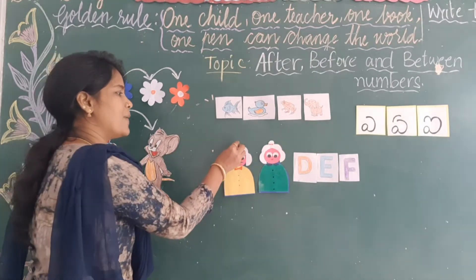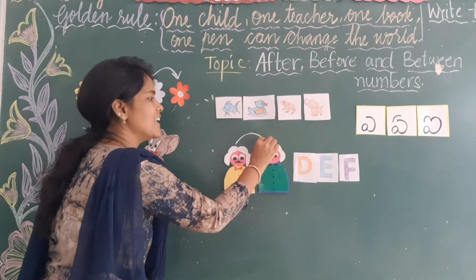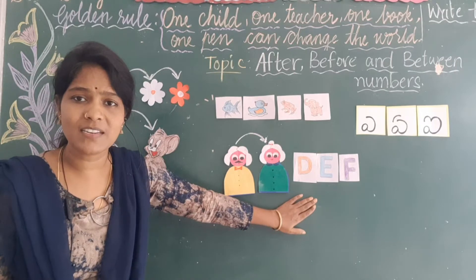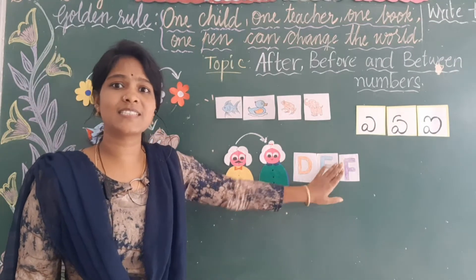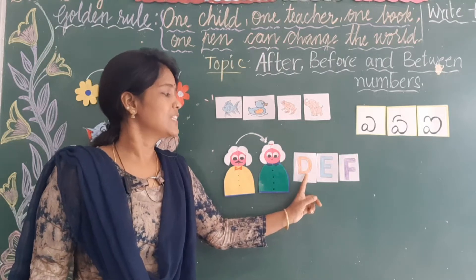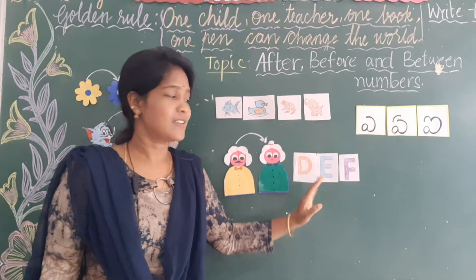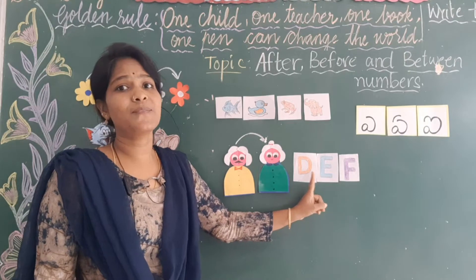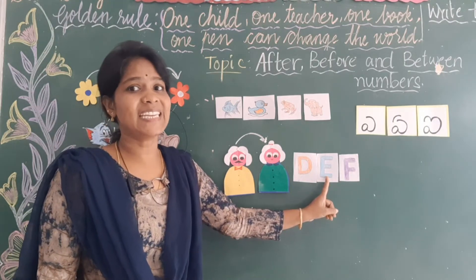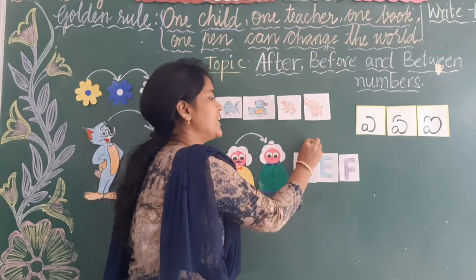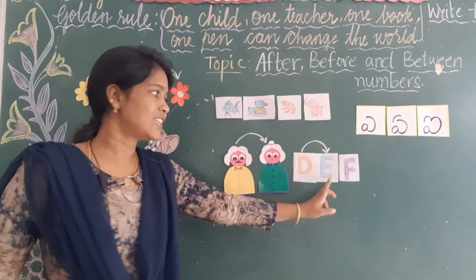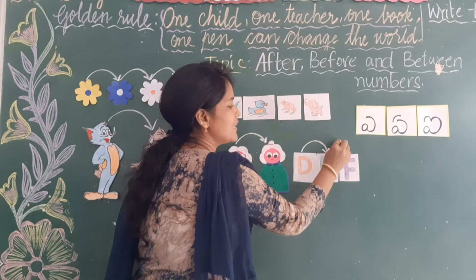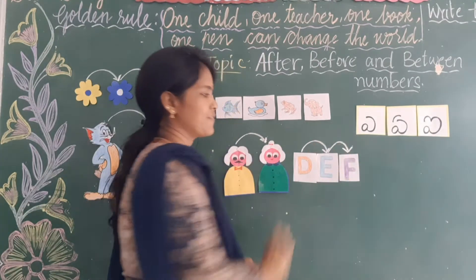Now look at these letters. Can you see the letters properly? What are they? Read out — D, E, F. First which letter is there? D is there. After D, which letter is there? E. After D, E letter is there. After E, which letter is there? Yes, there is F. After E, there is F.